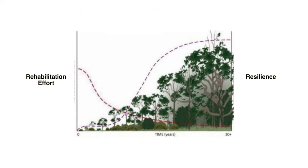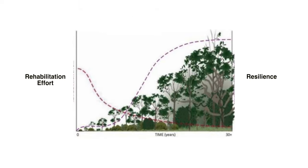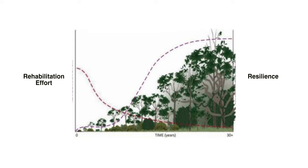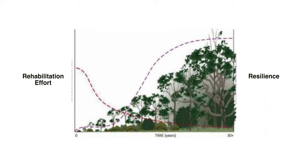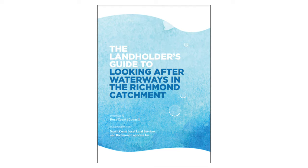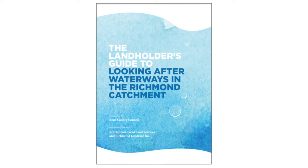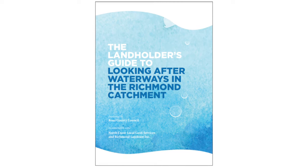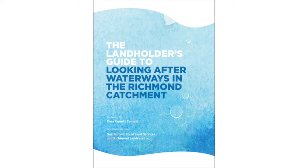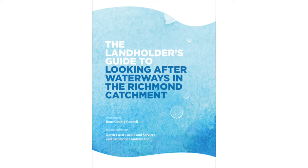This graph shows rehabilitation effort on the left and resilience on the right. It shows that as the rehabilitation matures, effort reduces and resilience increases. For more details about all these actions, there's lots of guidance resources designed to help you to help yourself. Here's a good one for the Richmond catchment, and if you search our Local Land Services website, ask your local council or land care group, you should be able to find some for your local area.